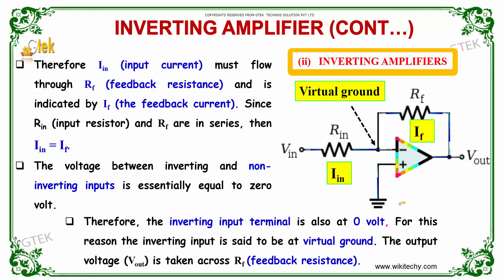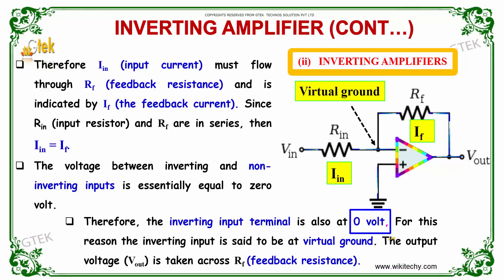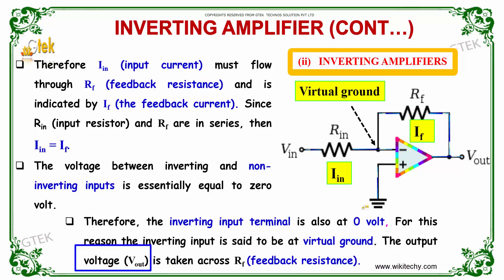The voltage between the inverting and non-inverting inputs is essentially equal to 0 volts. Therefore, the inverting input terminal is also at 0 volts. For this reason, the inverting input is said to be at virtual ground. The output voltage V_out is taken across R_F, the feedback resistance.